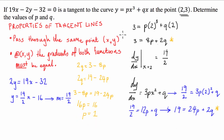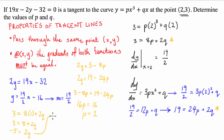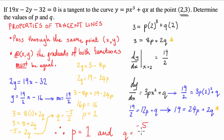Substituting p equals 1 into the first equation: 3 equals 8 times 1 plus 2q, so 3 equals 8 plus 2q, giving negative 5 equals 2q, therefore q equals negative 5/2. So our final answers are p equals 1 and q equals negative 5/2.